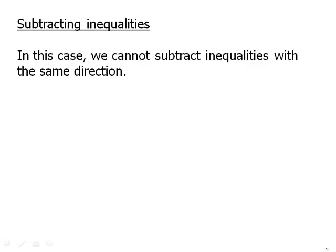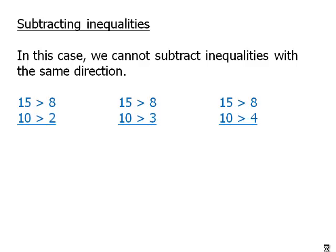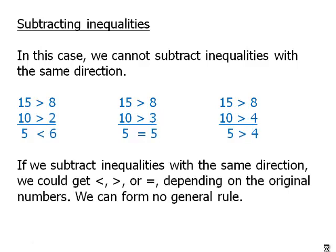So in this case, for subtracting inequalities, we cannot subtract inequalities with the same direction. So here are a bunch of inequalities. These are valid inequalities, all lined up with the inequalities in the same direction. Notice that if we subtract, well, in different cases, we could get a less than sign, an equal sign, or a greater than sign. If we subtract inequalities with the same direction, we could get any of those signs. So again, it's pure mathematical nonsense. If you subtract two inequalities with the same direction, there's no way to predict what kind of relationship will result.